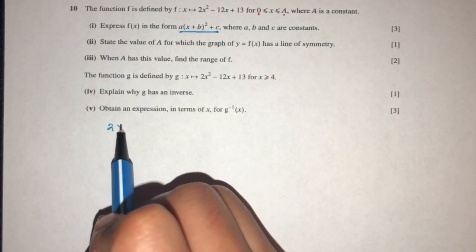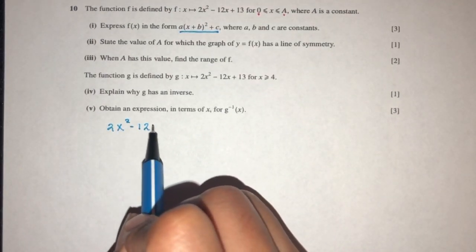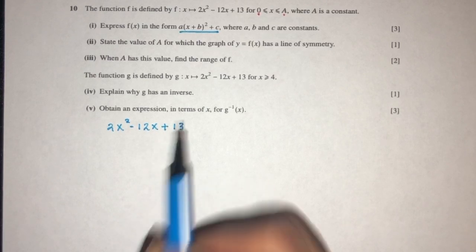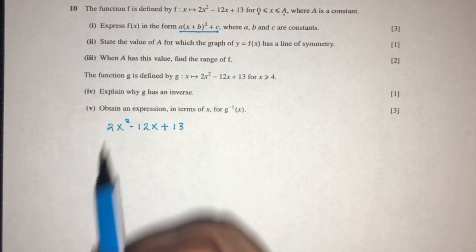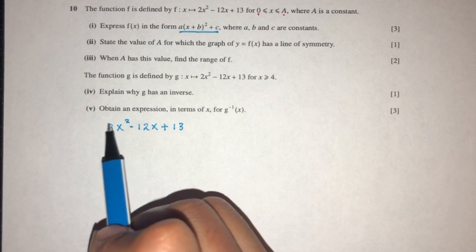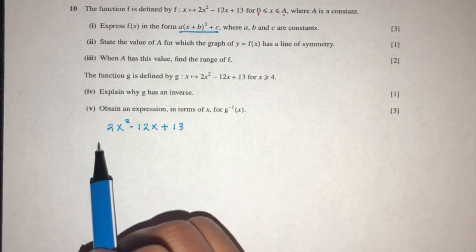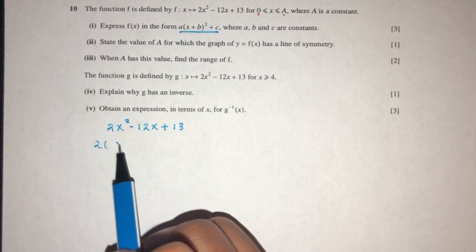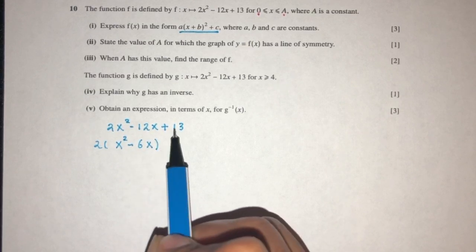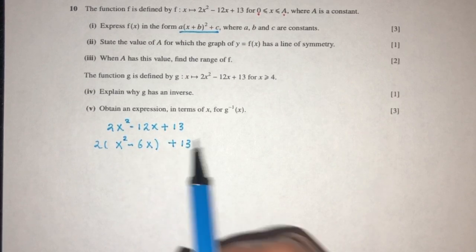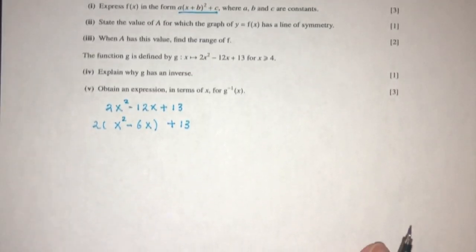First we have 2x squared minus 12x plus 13. Now we have to check the coefficient here of x squared is 2, we have to make this become 1, so we factorize 2 outside. That will become x squared minus 6x, and for this one I can just leave this outside, we don't care about this one.